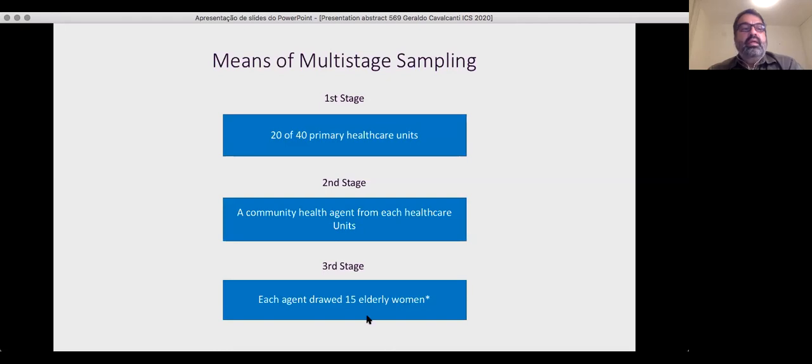Finally, in third stage, each selected agent visited 15 elderly women randomly selected. When the sample size for that primary unit exceeded 15 volunteers, another agent was randomly selected.